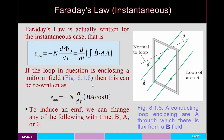If the loop encloses a uniform field, this simplifies to: EMF = −N · d/dt(B·A·cos(θ)). Here B is magnetic field strength, A is area enclosed by the loop, N is number of coils or turns, and θ is the angle between the area vector and the magnetic field. So to induce an EMF, you can change any one of these three parameters — B, A, or θ — in time; as long as at least one is changing, there will be a non-zero derivative and hence an induced EMF.